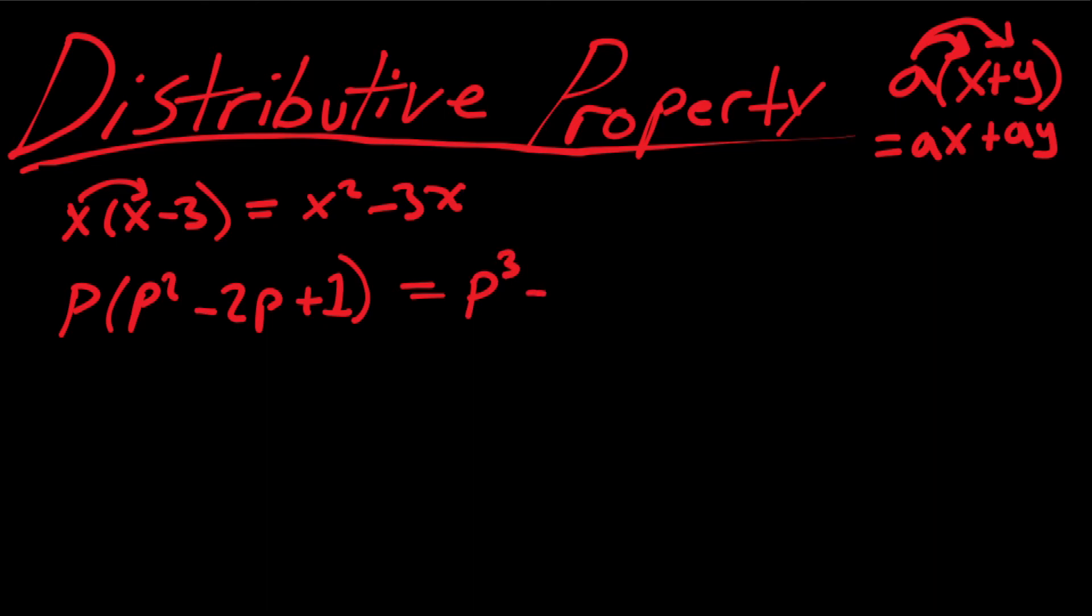And then we have the negative 2p, so that becomes negative 2p squared plus 1 times p. We don't need to write the 1 in front of the p, just write p. And yeah, those are a little more complex.